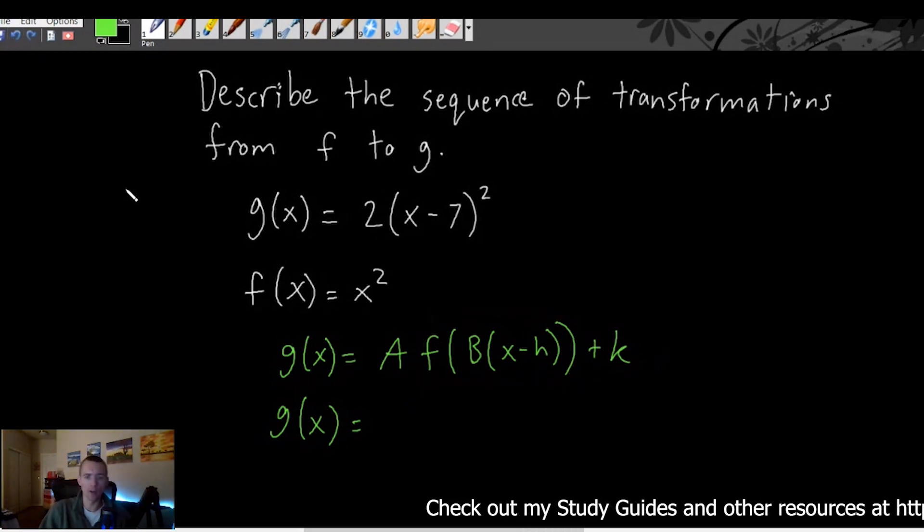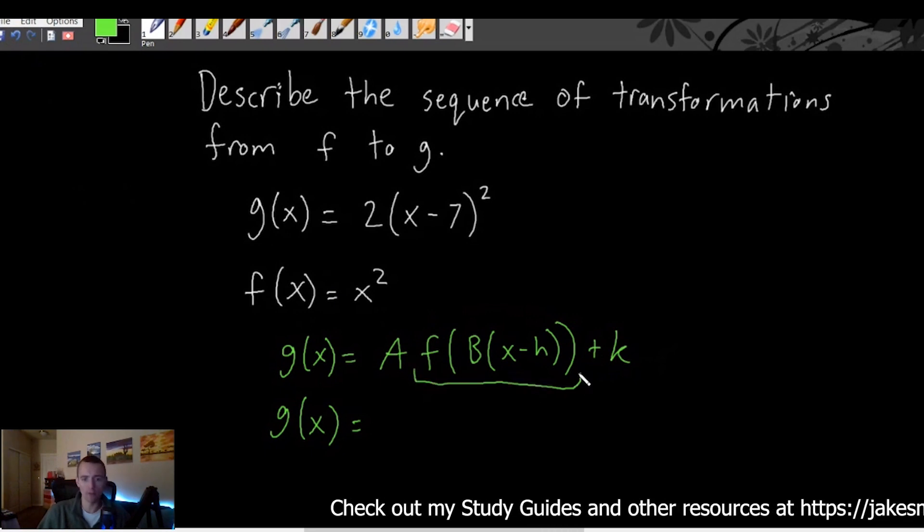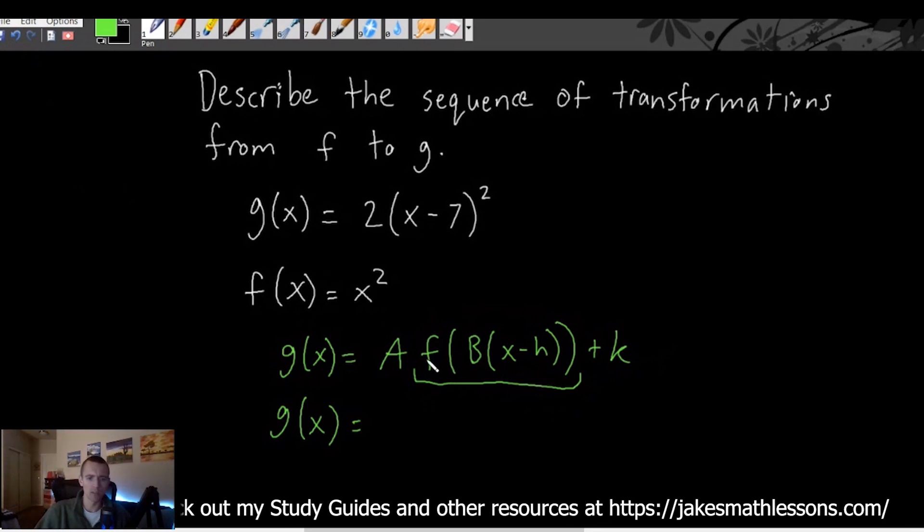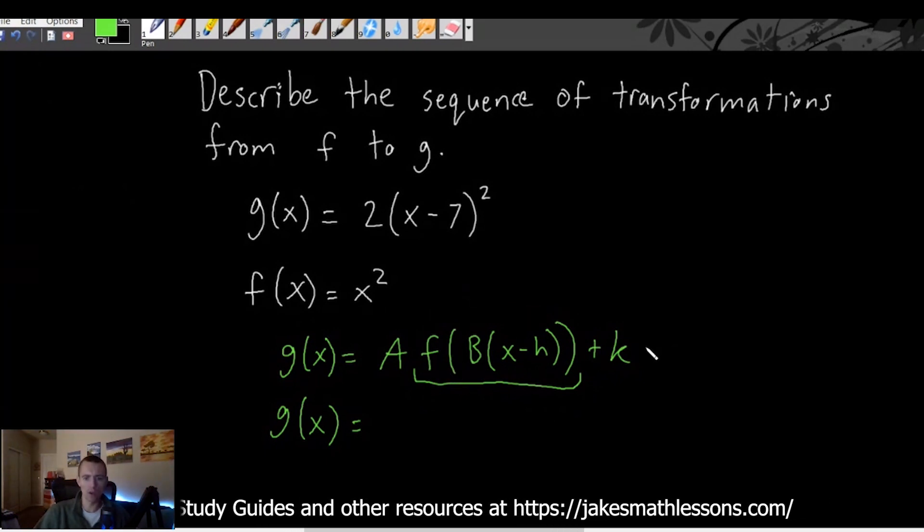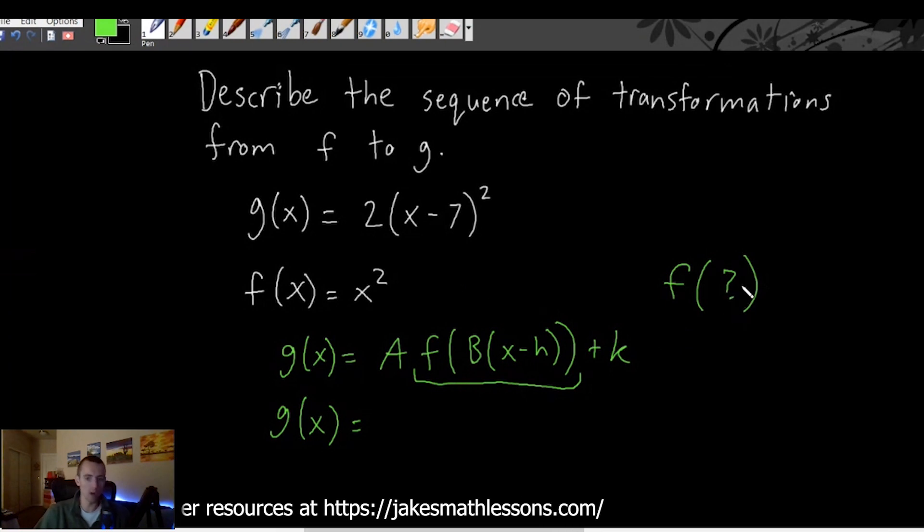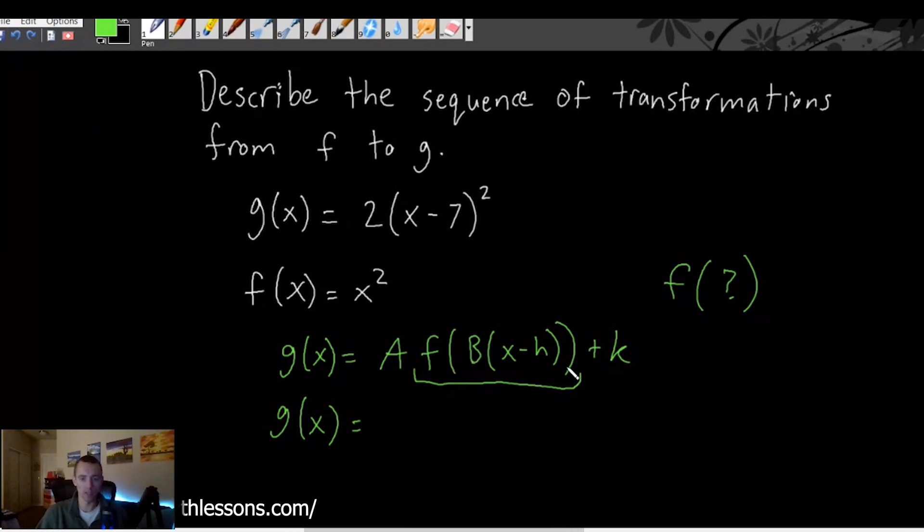Okay so what we need to figure out then is what is f(B(x - h)). Well what is this notation saying? This notation says whenever you have f of anything, f of question mark, whatever the thing is that's in here, whatever this inside your parentheses is - in this case it's B times (x - h) but it doesn't matter what it is.